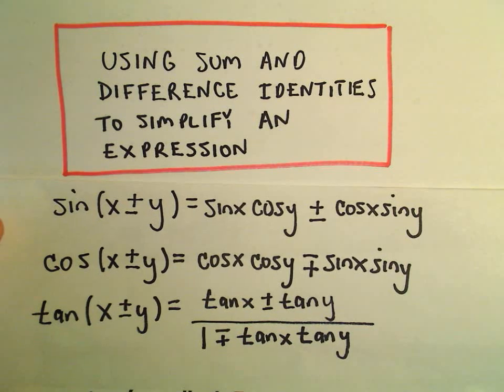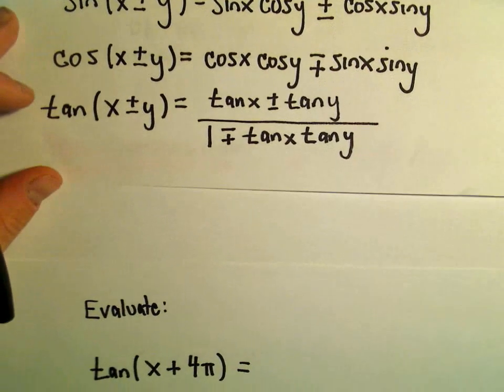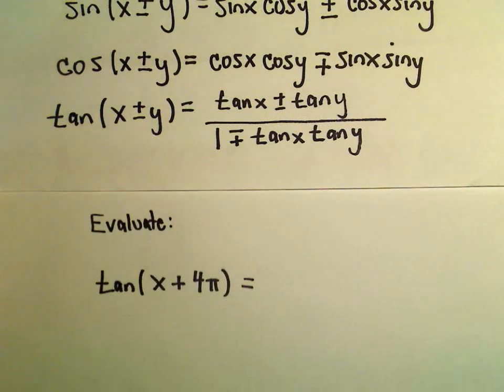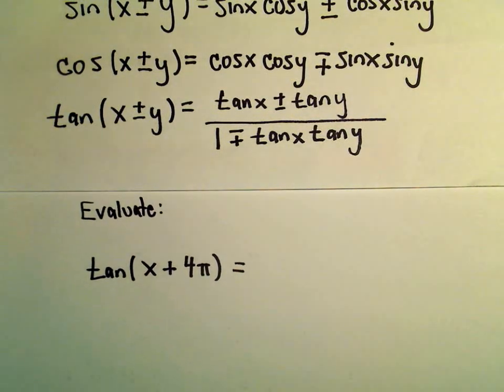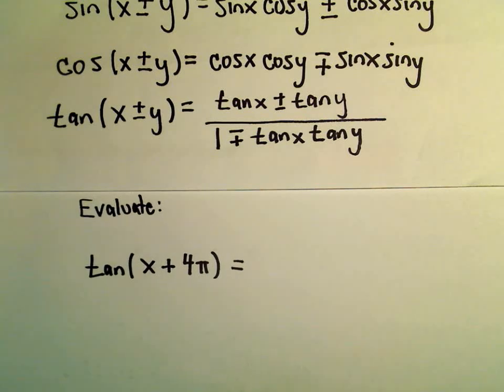All right, so another example using sum and difference identities to simplify an expression. Here we're going to evaluate tangent of x plus 4π. We're just going to simplify that down a little bit.